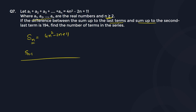So if Sn is given, we can find Sn-1 by substituting n as n minus 1. This becomes 4 times (n minus 1) squared minus 2 times (n minus 1) plus 11, which expands to 4n squared minus 8n plus 4 minus 2n plus 2 plus 11.